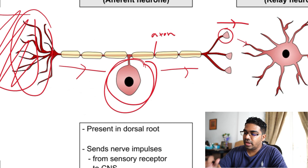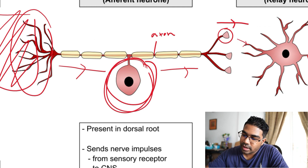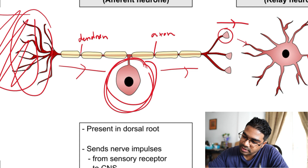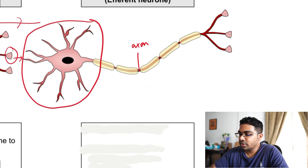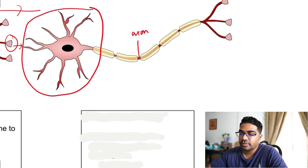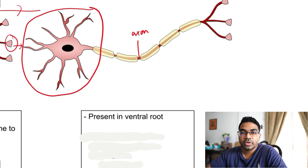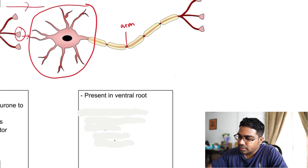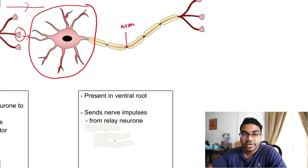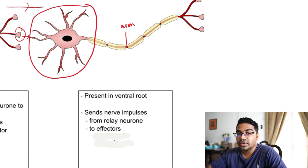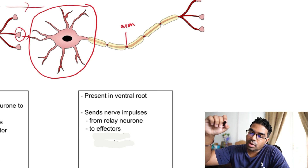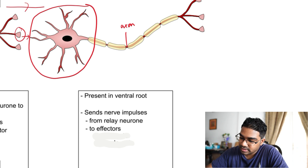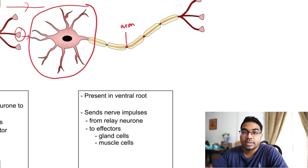In the sensory neuron, the cell body lies right in the middle and it typically has a very long dendron — the part that carries nerve impulses towards the cell body — and a relatively short axon. The motor neuron's job is to receive nerve impulses from the interneuron. It is located in the ventral root, and it sends nerve impulses from the relay neuron to the effectors — either gland cells or muscle cells.